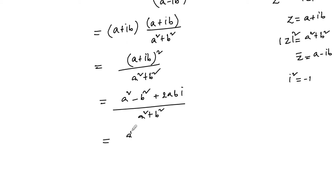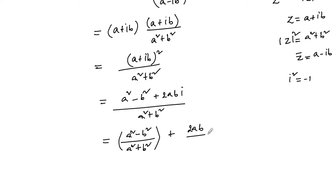So let us separate the real part and imaginary part. The real part is (a squared minus b squared)/(a squared plus b squared), and the imaginary part is 2ab/(a squared plus b squared). So this is our complex number z.